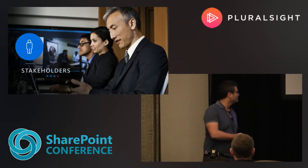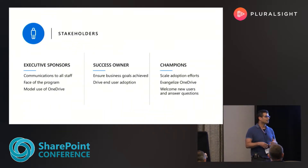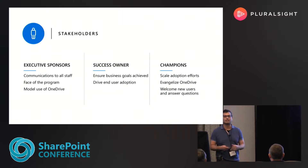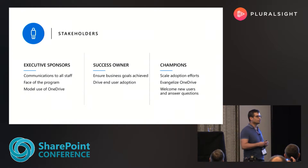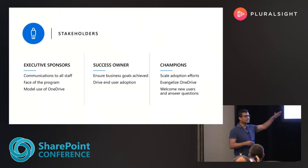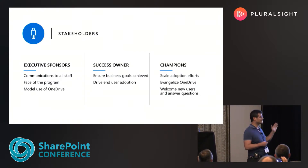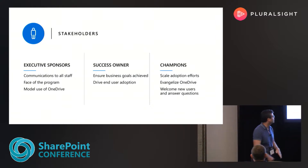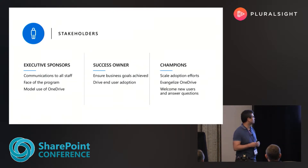We're going to start by talking about stakeholders. When building your project team, you're not going to want it to be just yourself. In addition to the horsepower to help you execute this end user adoption campaign, you want to bring on people with additional influence and credibility with the employees you're trying to reach. There are three key categories of stakeholders: executive sponsors, success owners, and champions. That doesn't mean there aren't other important roles — like someone to do communications or training — but these are really crucial roles.